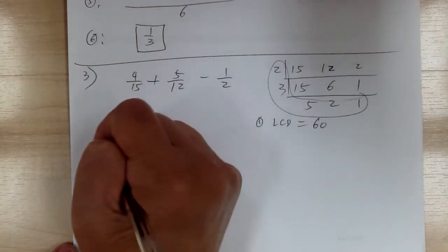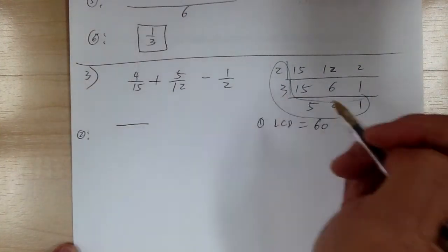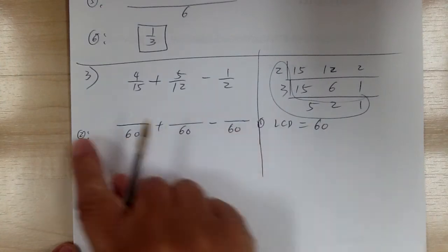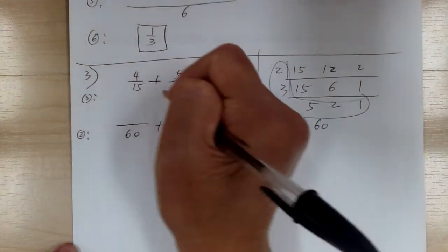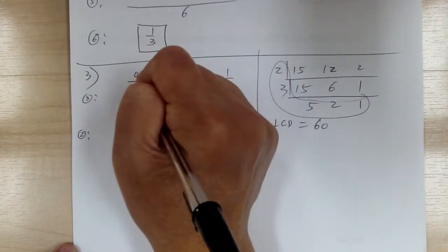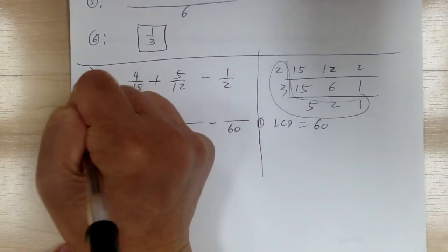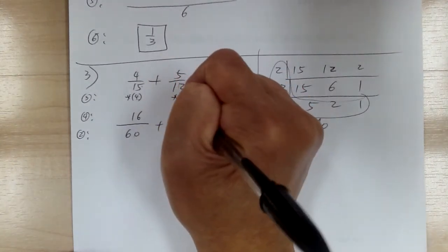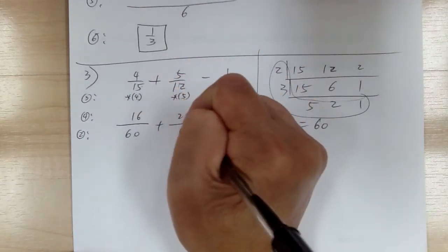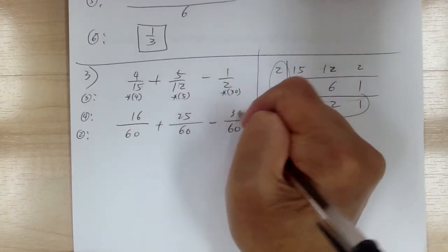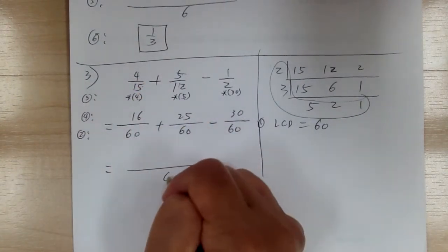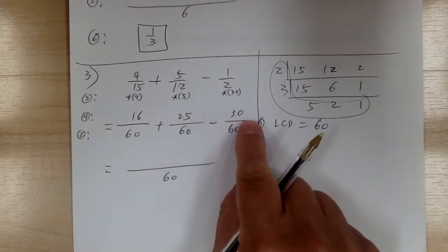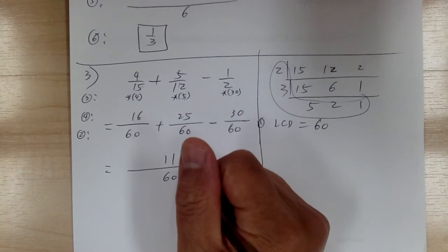Step one: LCD equals sixty. Step two: get your common denominator. Make sure you do step two before worrying about anything on the top. Step three: figure out what to multiply. From fifteen to sixty, multiply by four — fifteen times four is sixty, four times four is sixteen. From twelve to sixty, multiply by five — twelve times five is sixty, five times five is twenty-five. One-half needs to multiply by thirty, giving thirty on top. So sixteen plus twenty-five gives forty-one, minus thirty gives eleven over sixty. Check if you can simplify — you cannot. That's your answer.